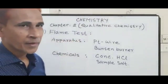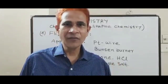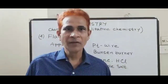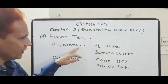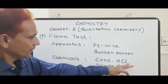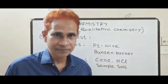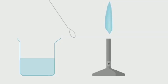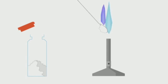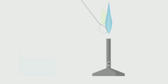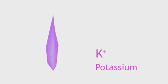Now, flame test. Flame test is one of the dry tests for identification of metal ions. For the flame test, we need a platinum wire and a Bunsen burner as apparatus, and concentrated HCl and sample salt as chemicals. You take a clean platinum wire, dip it in concentrated hydrochloric acid with a very small amount of sample salt, then hold it into the oxidation flame. You observe different characteristic colours in the flame for different metals.